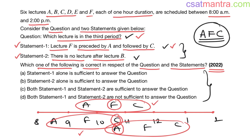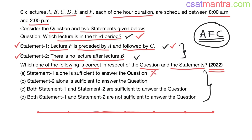Statement 2 says there is no lecture after B, meaning B is the last lecture. But if B is last, the third period can be any one of A, C, D, E, or F. So here also we are not sure which lecture is in the third period. Statement 2 alone is also not sufficient.